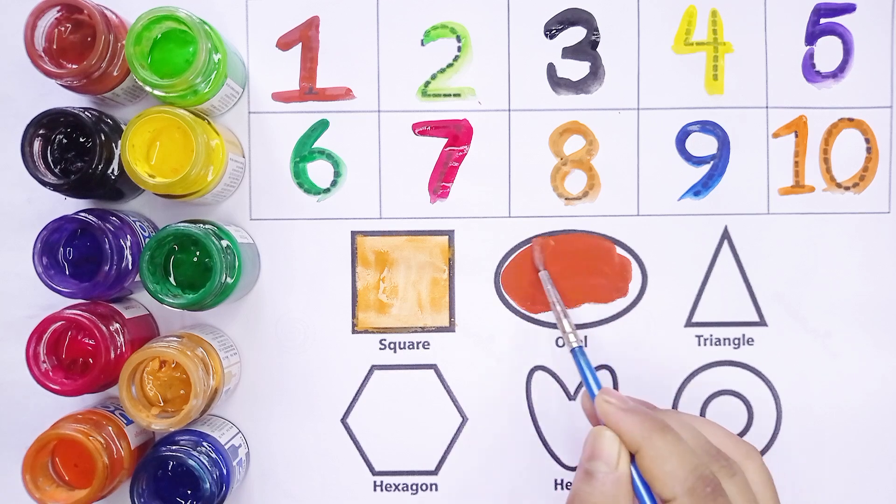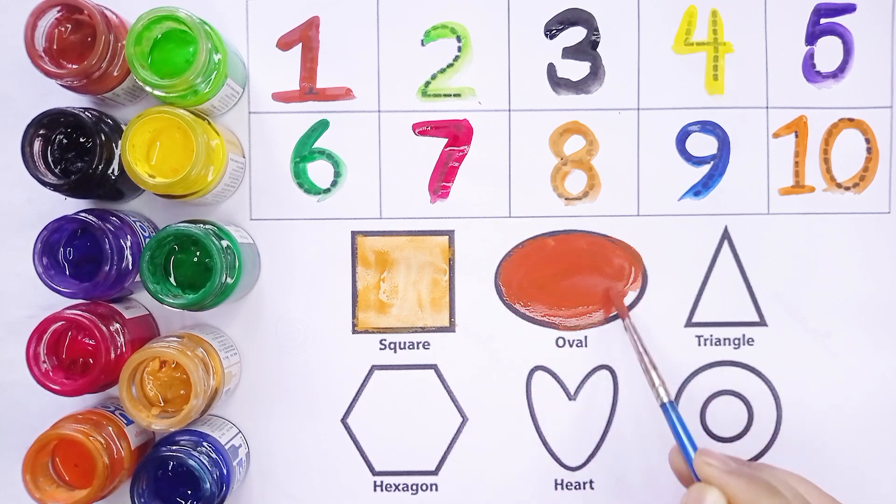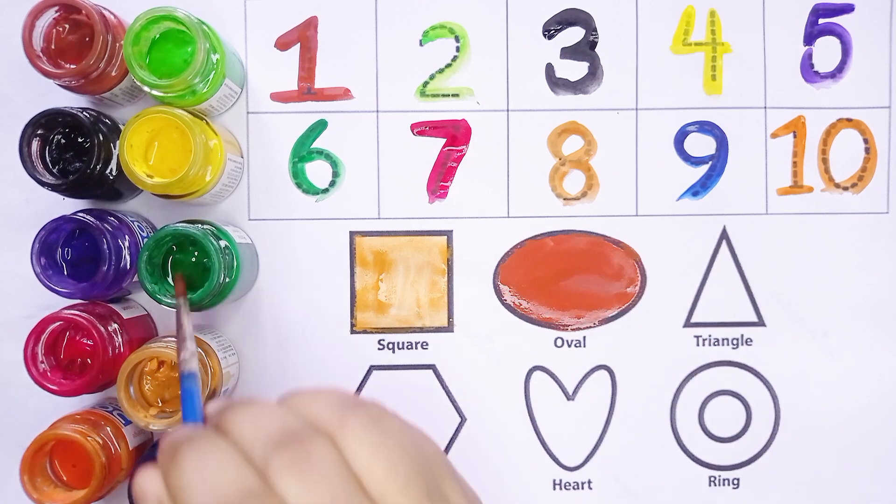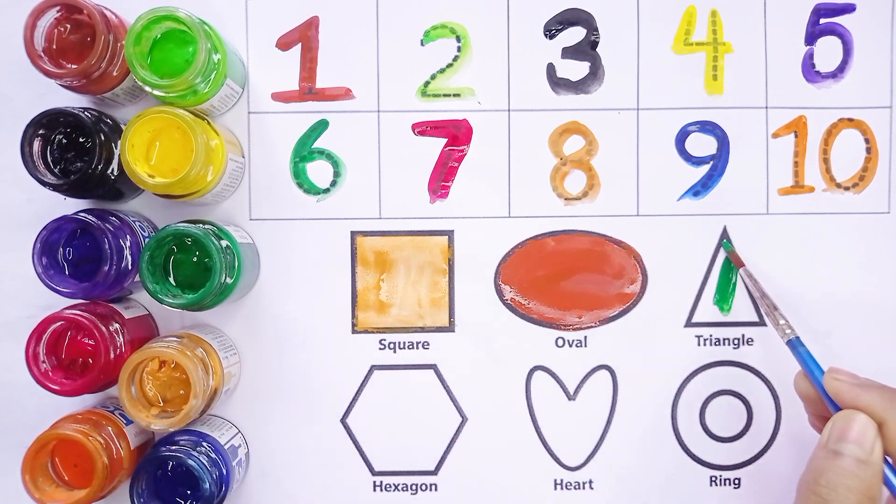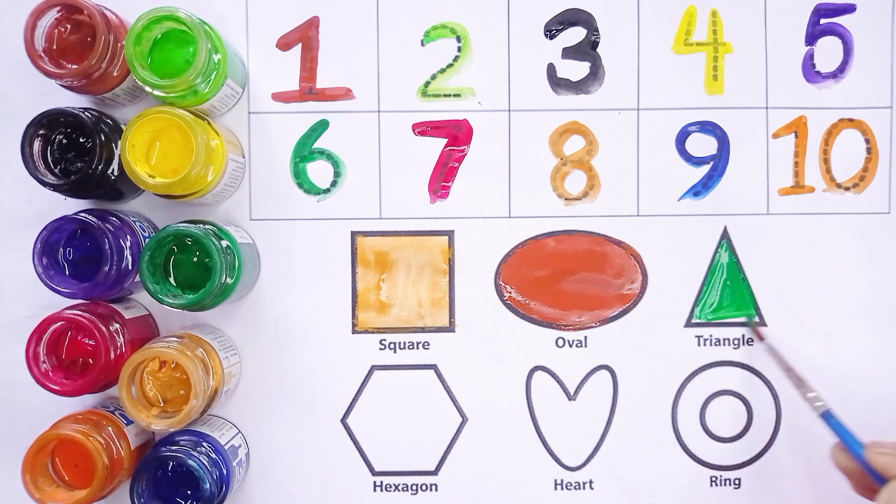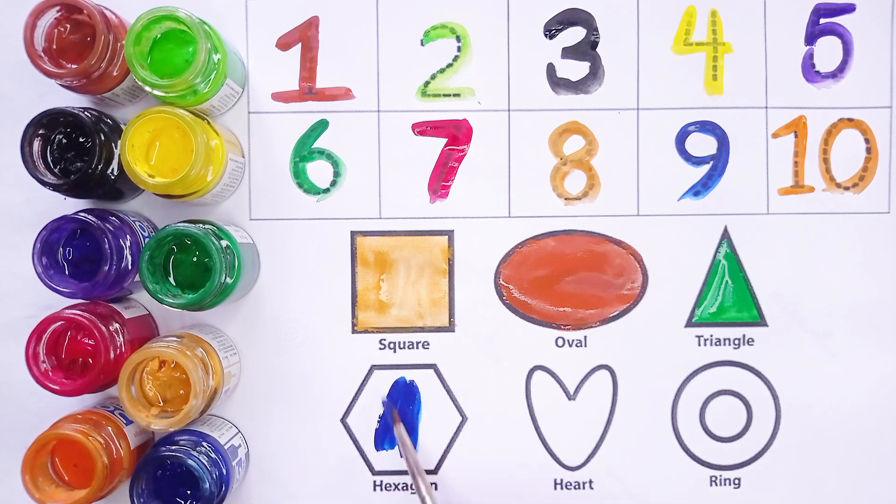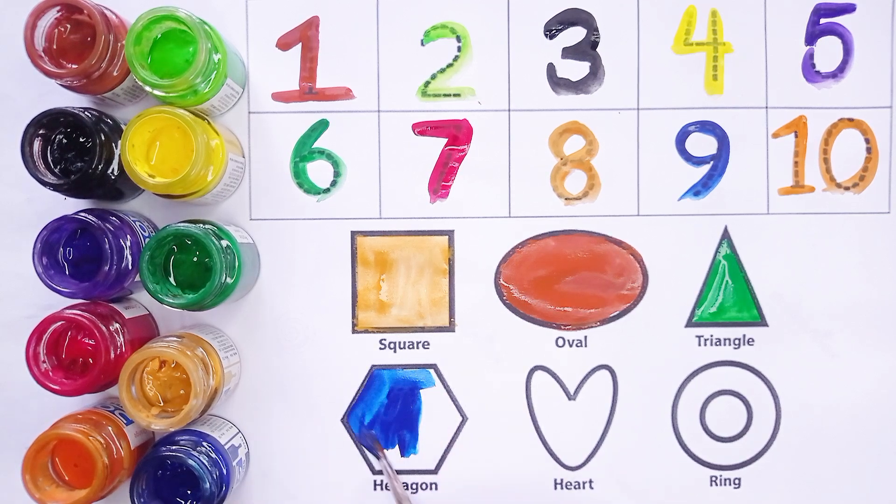Yeh hai brown color. Triangle. This is a triangle shape. Green color. This is a hexagon. Blue color. Which color? Blue.